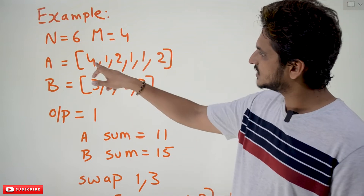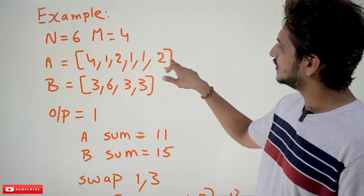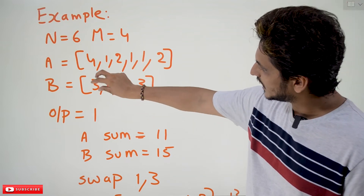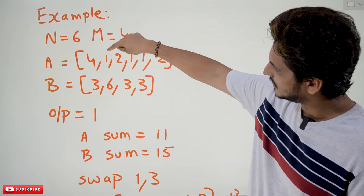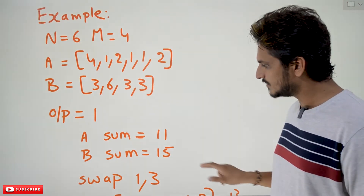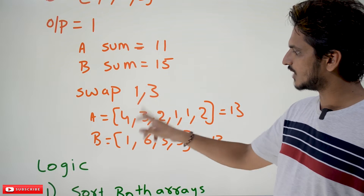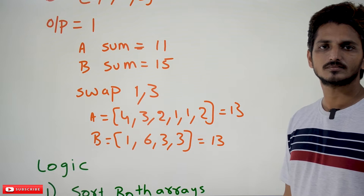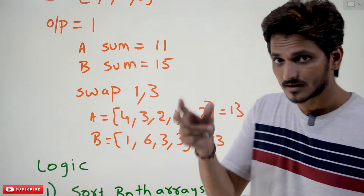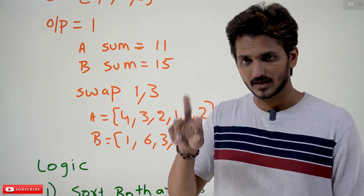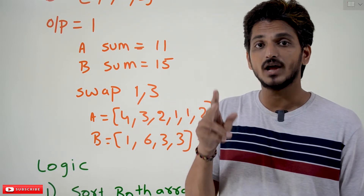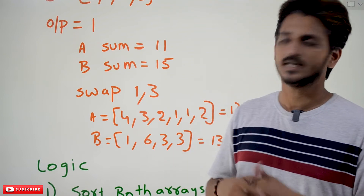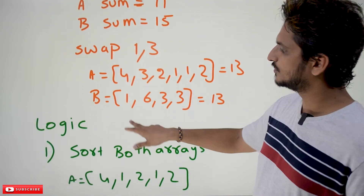Let's try to understand. Initially, the summation of A is equal to 11 and for B, sum is equal to 15. If you take out 3 from A and place it in B, and take 1 from B and place it in A, after swapping this pair the summation becomes 13 and 13 — sum is equal. So there exists a pair; by swapping those elements you are getting the summation value equal. If this happens, you have to return 1. Otherwise, return minus 1. Here, output should be 1.